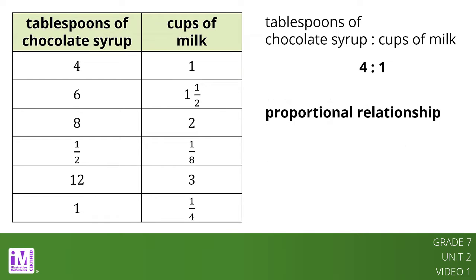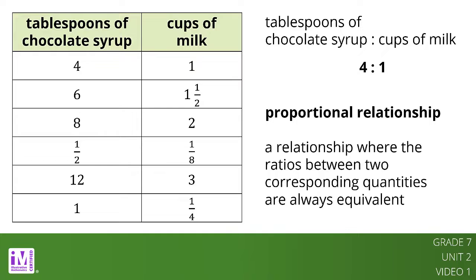A proportional relationship is a relationship where the ratios between two corresponding quantities are always equivalent, such as the relationship here between the tablespoons of chocolate syrup and the cups of milk.